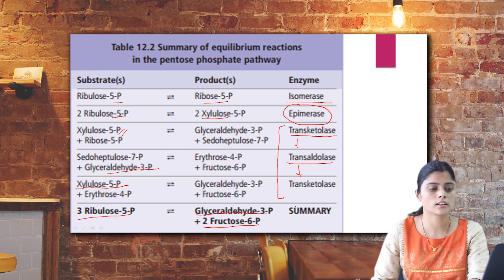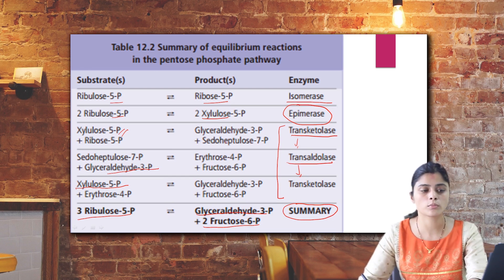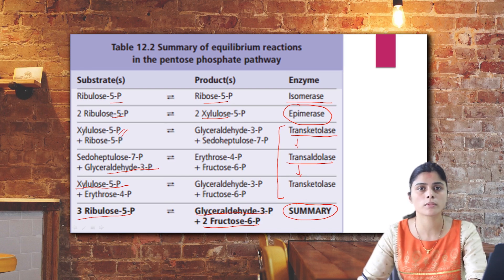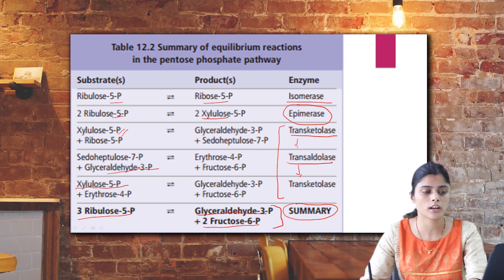In summary, 6 glucose molecules entered the HMP shunt pathway, with 1 glucose completely oxidized forming 6 CO2, 5 fructose 6-phosphate (convertible to glucose 6-phosphate by isomerase), and glyceraldehyde 3-phosphate. Both fructose 6-phosphate and glyceraldehyde 3-phosphate can proceed to glycolysis whenever the body requires it.